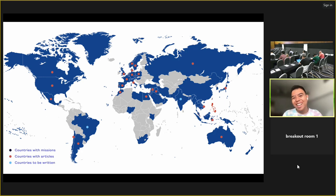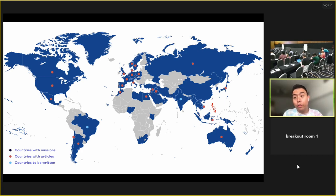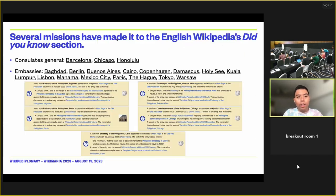After writing the Warsaw article in 2013, I then wrote the article on the Philippine Embassy in Tel Aviv in 2018 when I was there for the GLAM Wiki conference. Writing really took off during the pandemic. Countries shown in light blue are articles I've started, such as the Philippine Embassy in New Delhi, Brasilia, and Vienna. Several of these articles have made it to the English Wikipedia's 'Did You Know' section — three consulates general and seven embassies.